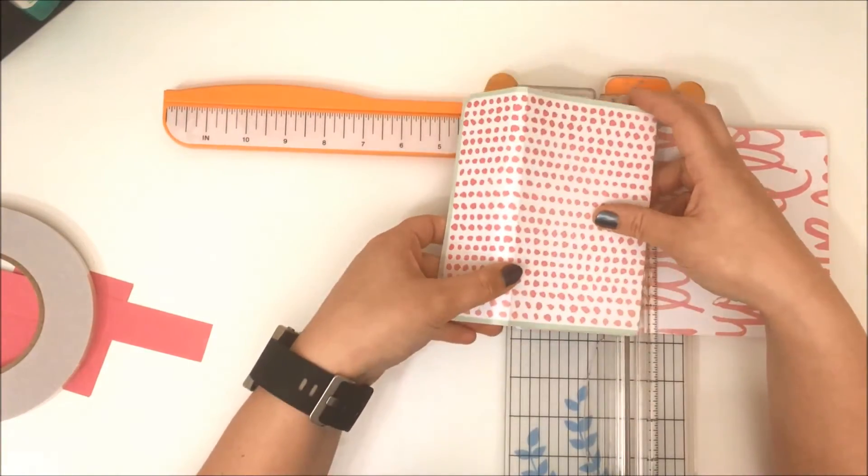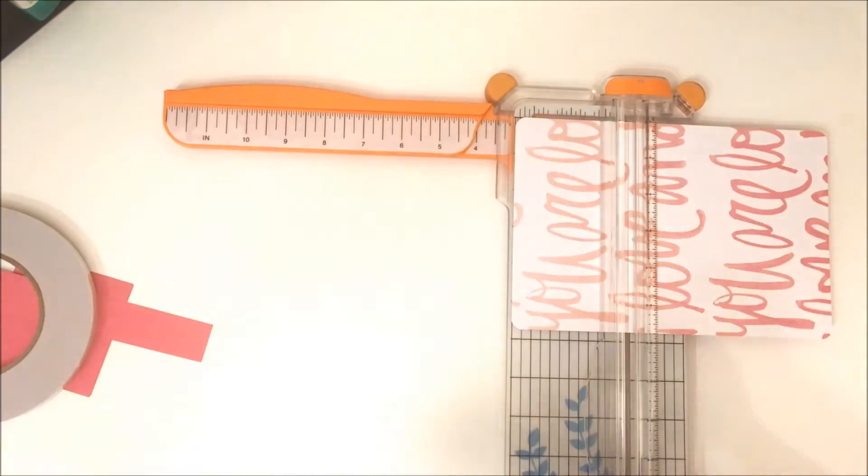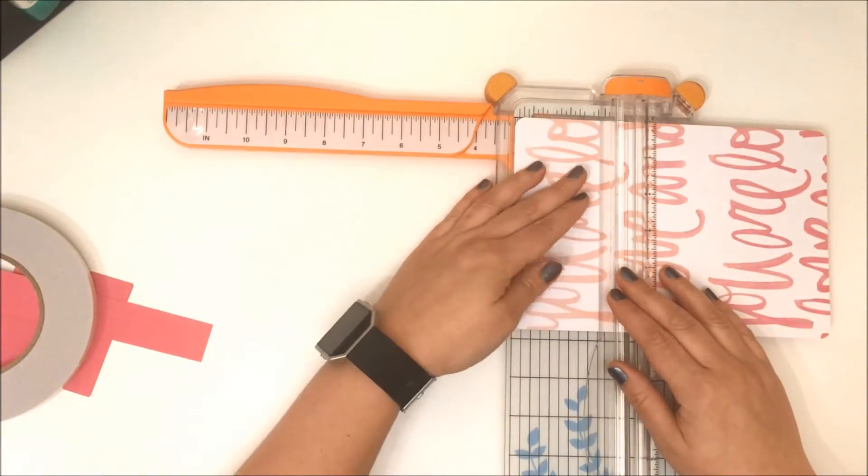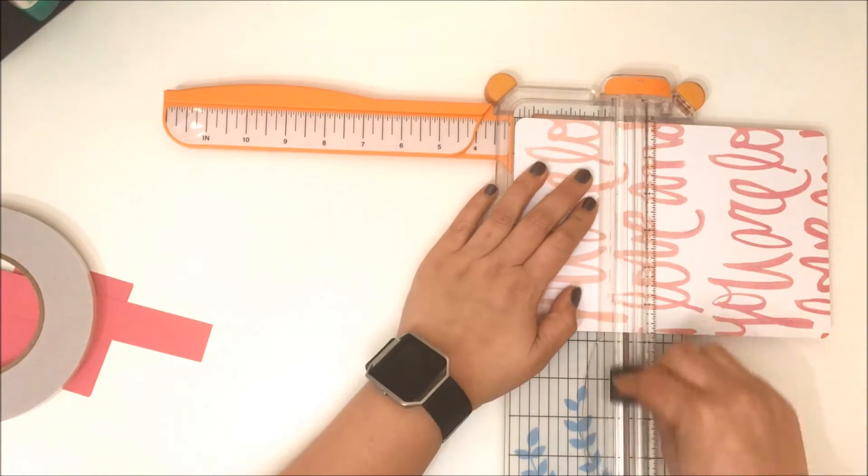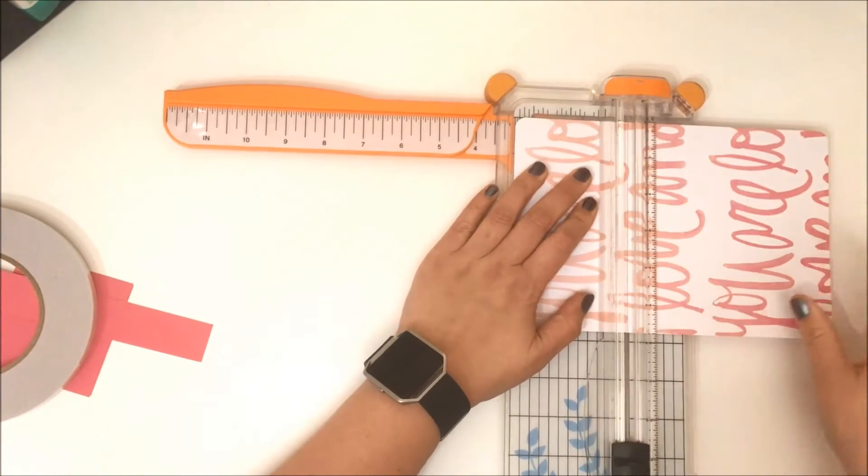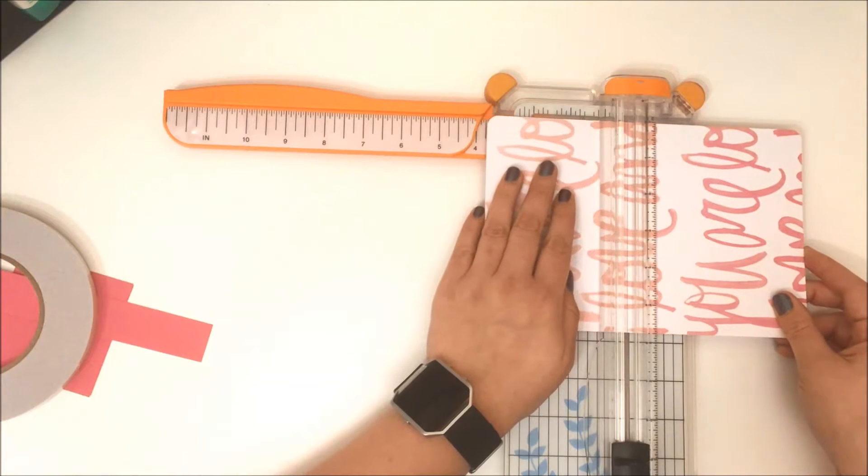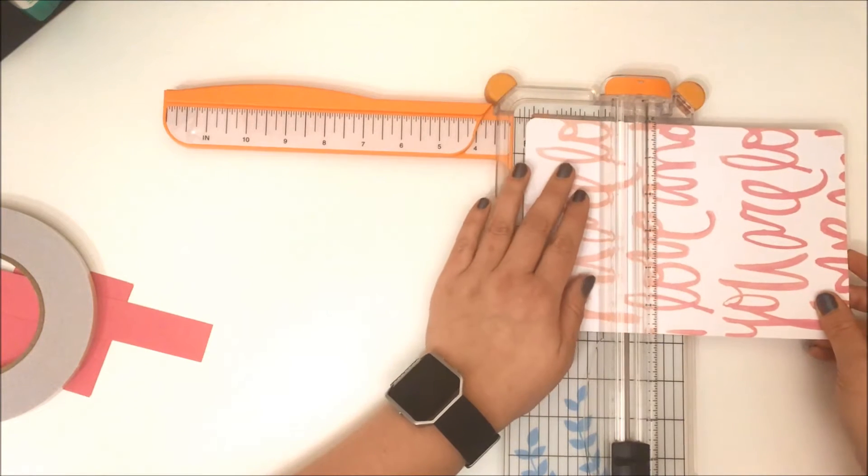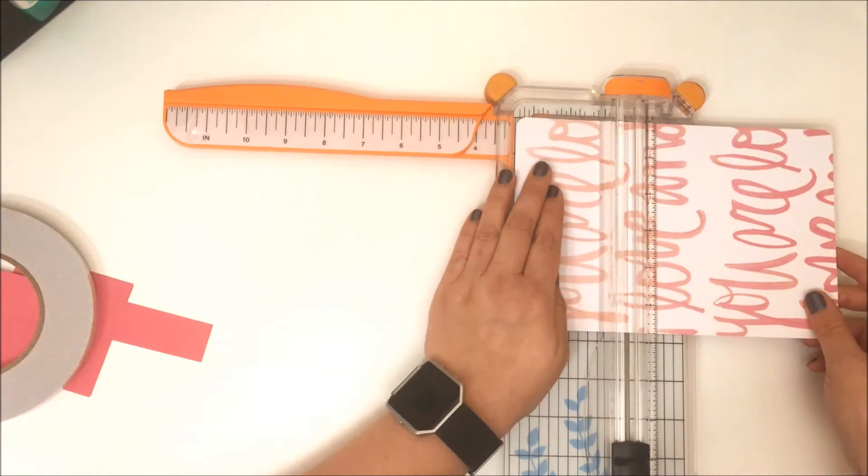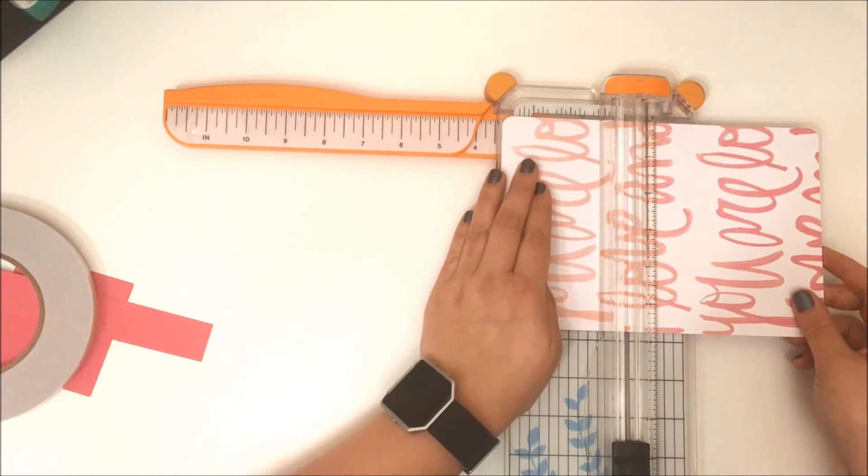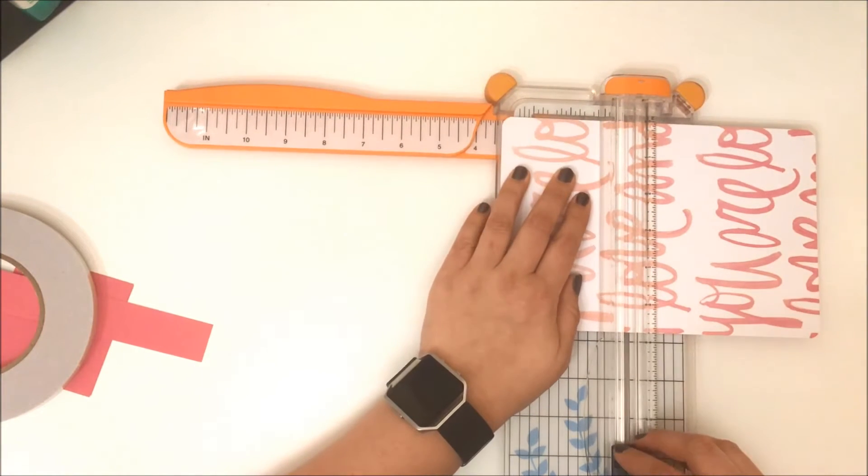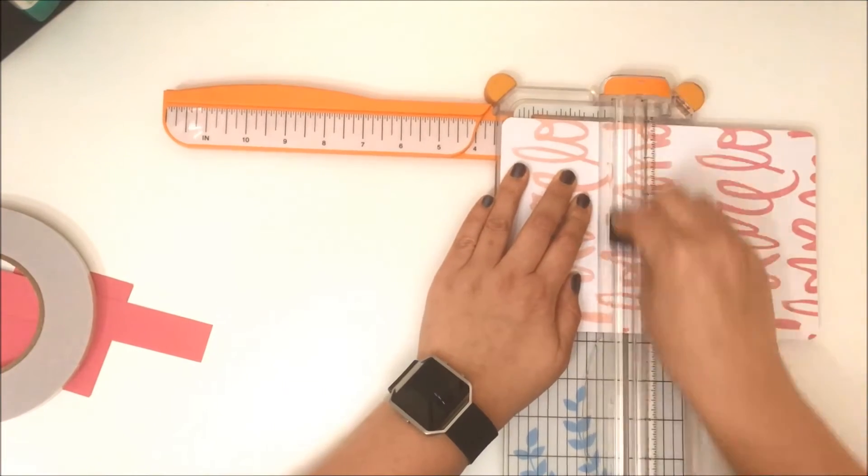Then you need to score that piece. My pink cardstock is actually a patterned paper too with pink on one side. I was just measuring to make sure I had the right dimensions. You need to score this at three inches and three and three-eighths inches.